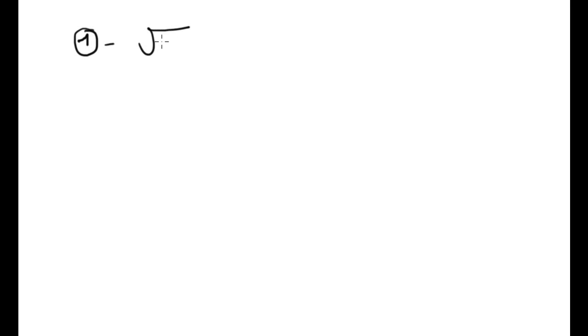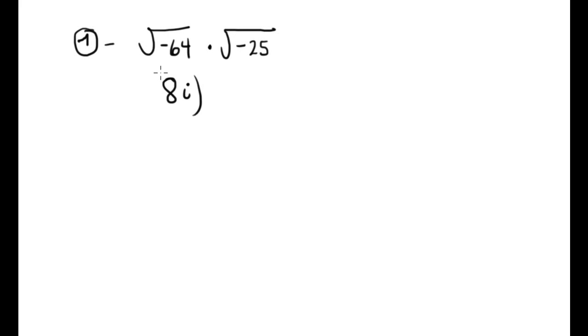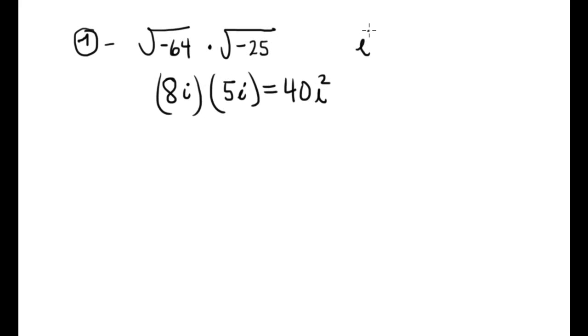Number one is square root of negative 64 times square root of negative 25. Remember, what is negative inside the radical is imaginary. Square root of negative 64 is 8i, because 8 is the square root of positive 64. Times square root of negative 25 is 5i. The multiplication gives 40i squared, and i squared is negative 1, so the final answer is negative 40.